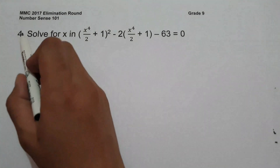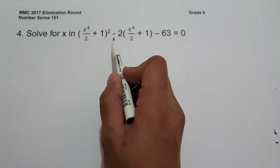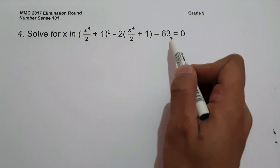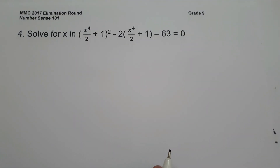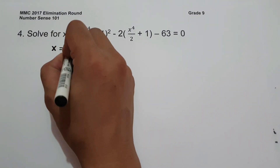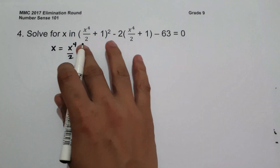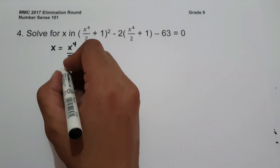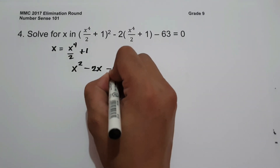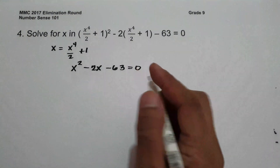For number 4, solve for x in x raised to 4 over 2 plus 1, raised to the power 2, minus 2 multiplied by the quantity of x raised to 4 over 2 plus 1, minus 63 equals 0. To find x, we represent x as x raised to 4 over 2 plus 1. Substituting, we get x squared minus 2x minus 63 equals 0. Let us factor this expression.